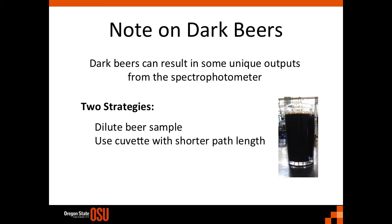Alternatively, and at a cost, the cuvette used to make the measurement could have a shorter path length, which might mean you have to purchase a new cuvette. There are cuvettes that have path lengths of less than 10 millimeters, and these don't require any dilutions and will probably give you the best interpretations of true color.